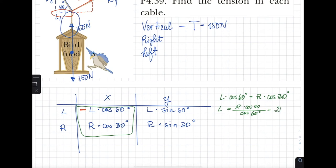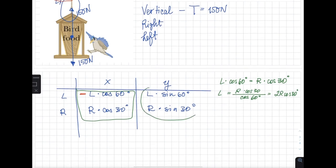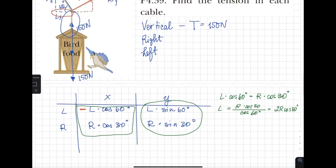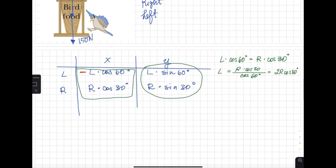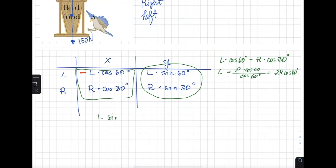Boom, so this will later serve me for substitution. Now let's look at vertical. Vertically these two guys put together should counteract the weight of the bird feeder and be equal to, put together, to 150 newtons. So I'm going to say L sine of 60 plus R sine of 30 equals 150 newtons.